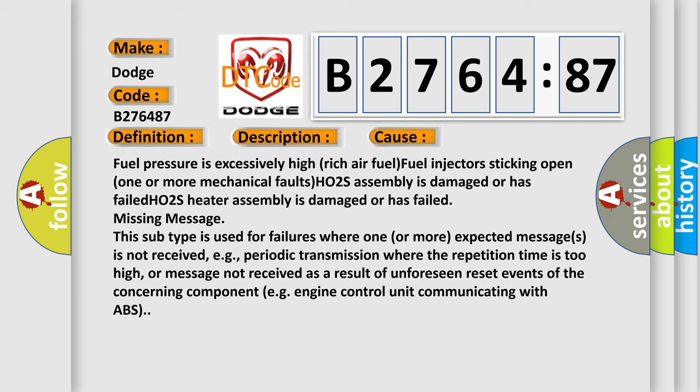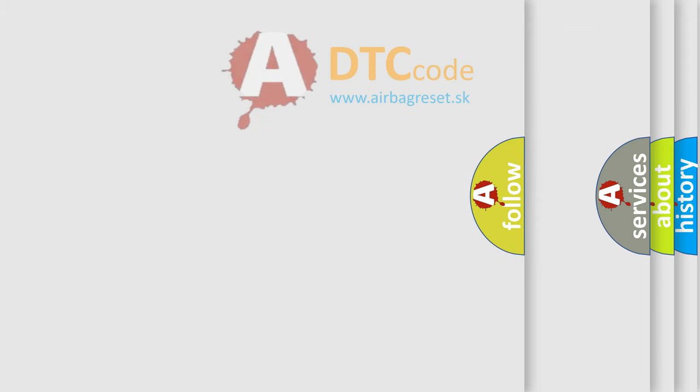Fuel pressure is excessively high, rich air fuel, fuel injectors sticking open, one or more mechanical faults, H02S assembly is damaged or has failed, H02S heater assembly is damaged or has failed. Missing message: this subtype is used for failures where one or more expected messages is not received, e.g., periodic transmission where the repetition time is too high, or message not received as a result of unforeseen reset events of the concerning component, e.g., engine control unit communicating with ABS.